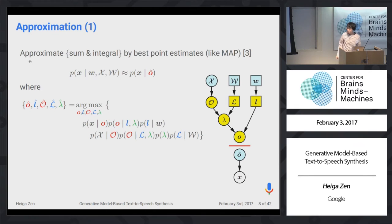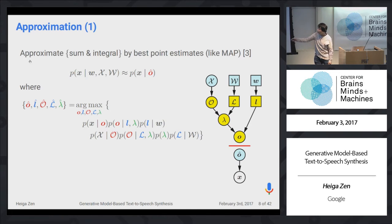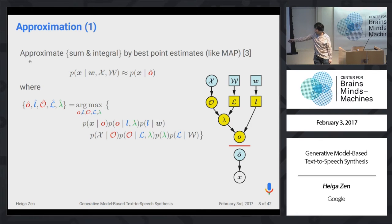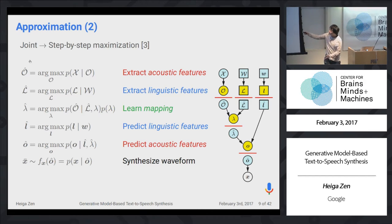But this full integration is hard, so we approximate by joint maximization — MAP estimation. Instead of integrating over all possible random variables, we find the best possible values based on the joint probability. Once we find the best values, we draw a sample from that distribution. However, this is still hard, so we introduce another approximation: we perform each maximization independently or sequentially. This decomposes the problem into five maximization problems and one random sampling step.